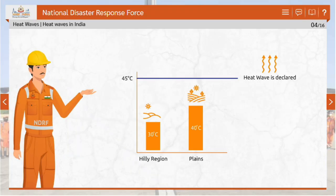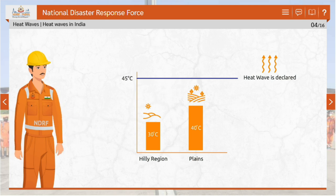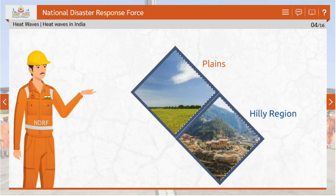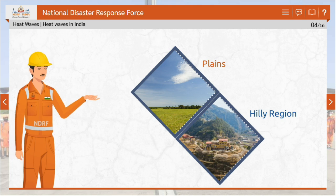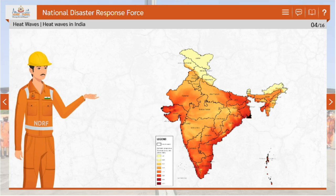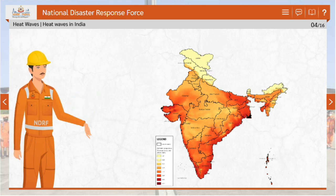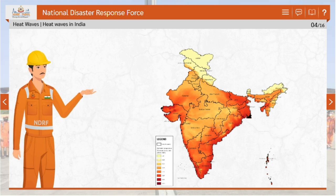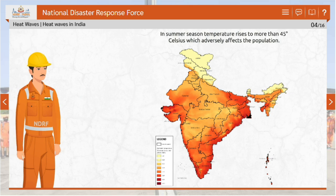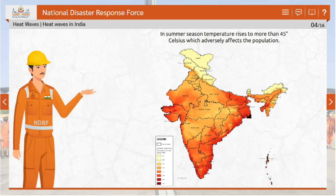According to the Indian Meteorological Department (IMD), a heat wave need not be considered so until the maximum temperature of a station reaches at least 40 degrees Celsius for plains and 30 degrees Celsius for hilly regions. When actual maximum temperature remains 45 degrees Celsius or more irrespective of normal maximum temperature, heat wave should be declared. Eastern, central and western parts of India like UP, Bihar, Odisha, Jharkhand, Vidarbha region of Maharashtra, MP, Andhra Pradesh, Sri Ganga Nagar of Rajasthan, etc. are more vulnerable to heat waves. In summer season, temperature rises to more than 45 degrees Celsius, which adversely affects the population.